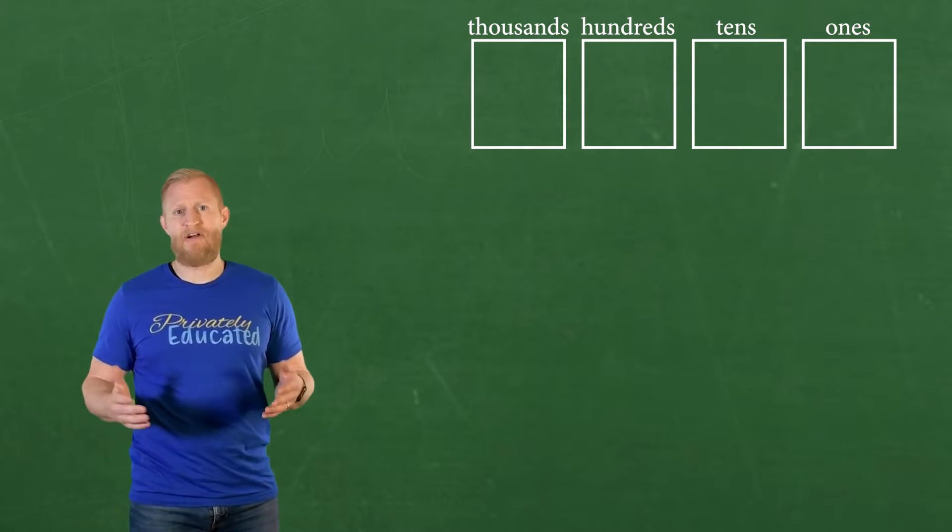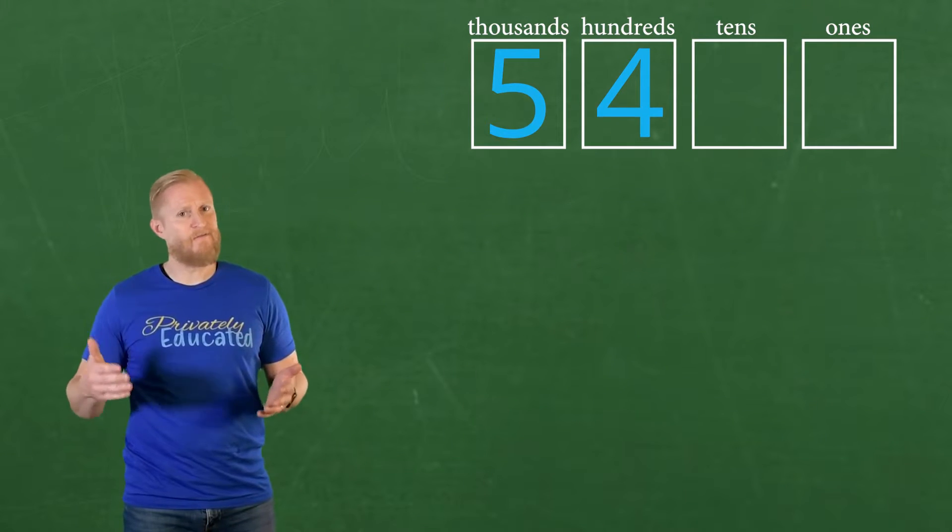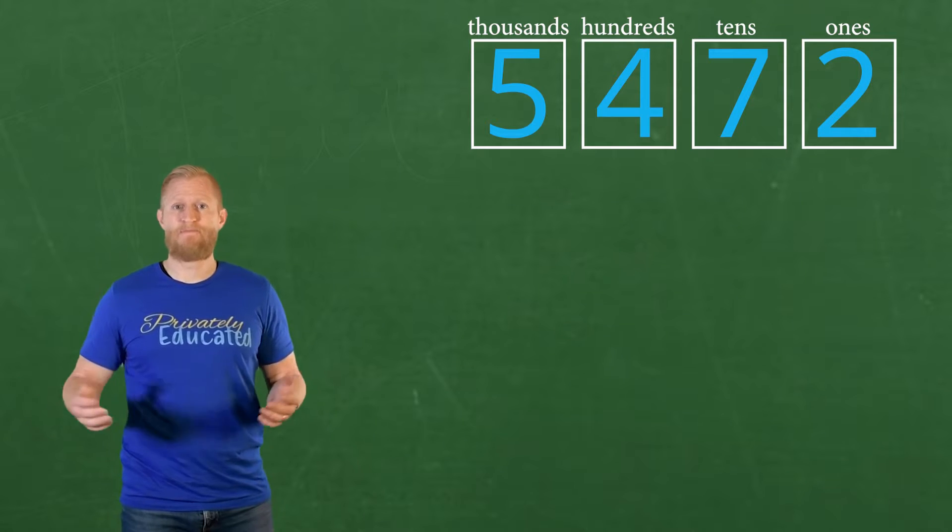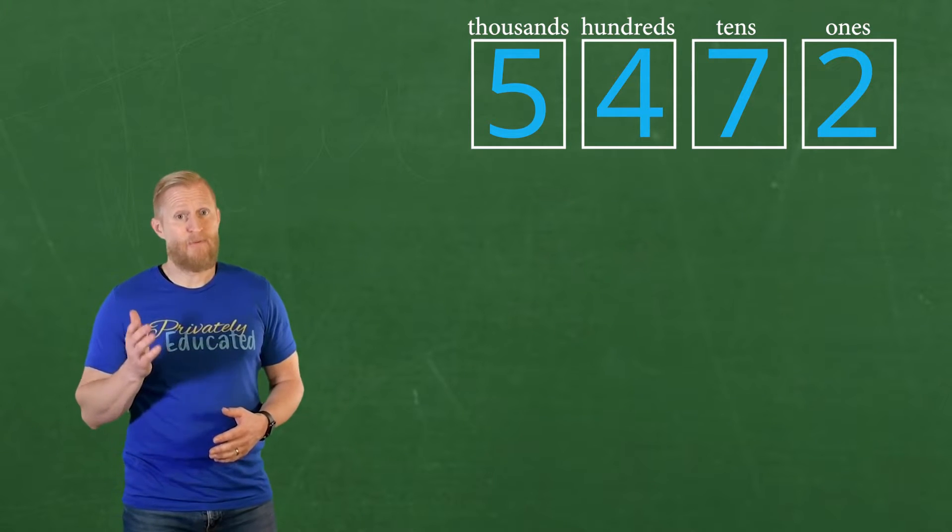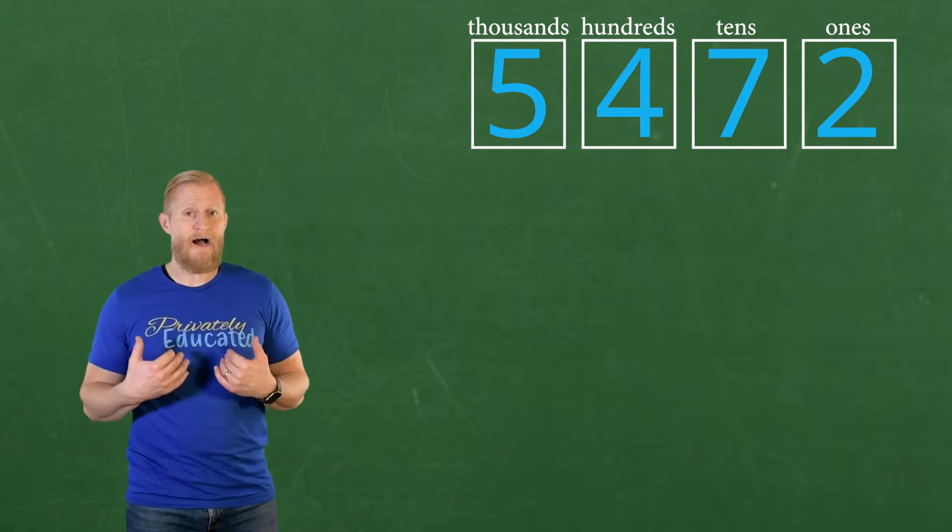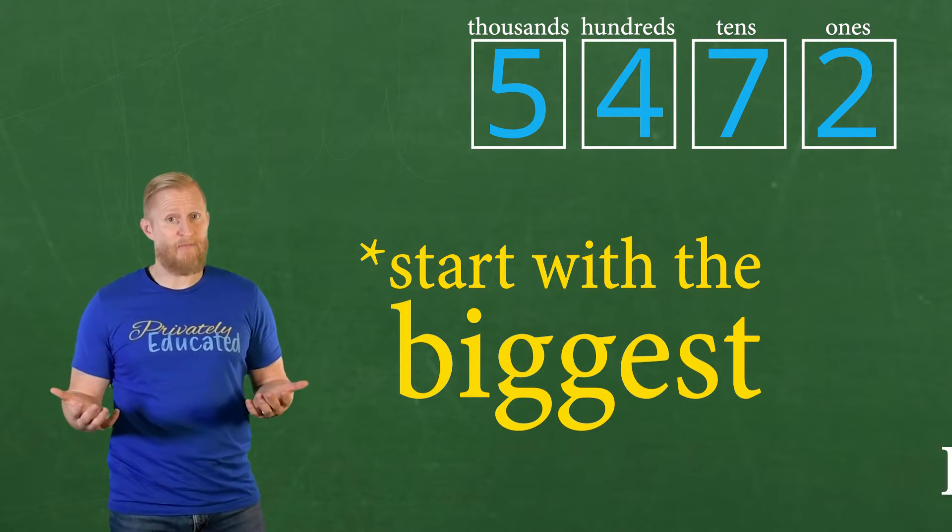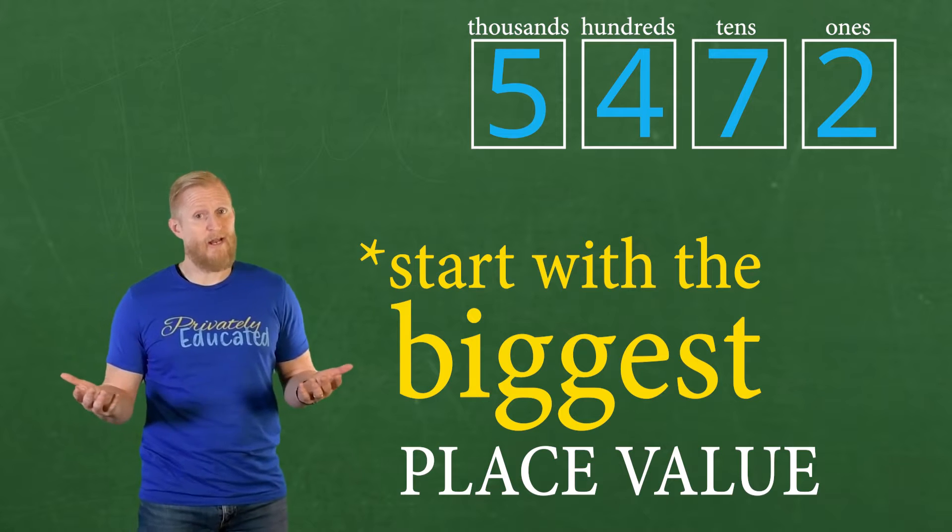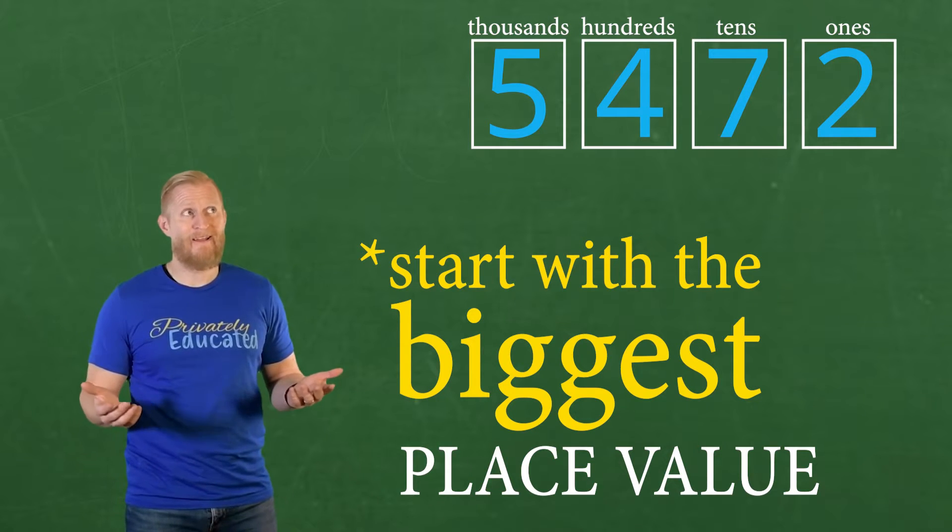And for example, let's start with the number 5,472. To break this number into its place value groups, I like starting with the biggest number because I think it looks more organized. Okay, I think it's prettier.